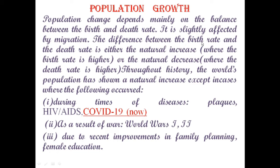The difference between the birth rate and the death rate is either natural increase, where the birth rate is higher — when the birth rate is higher, population will increase — or natural decrease, where the death rate is higher. When the death rate is higher, there will be a natural decrease in population.